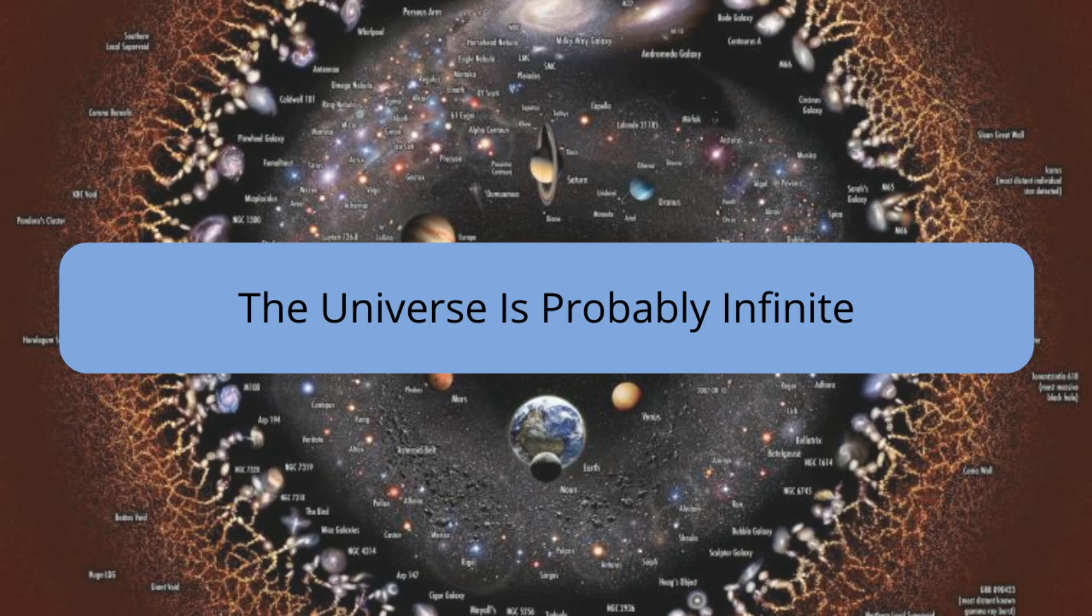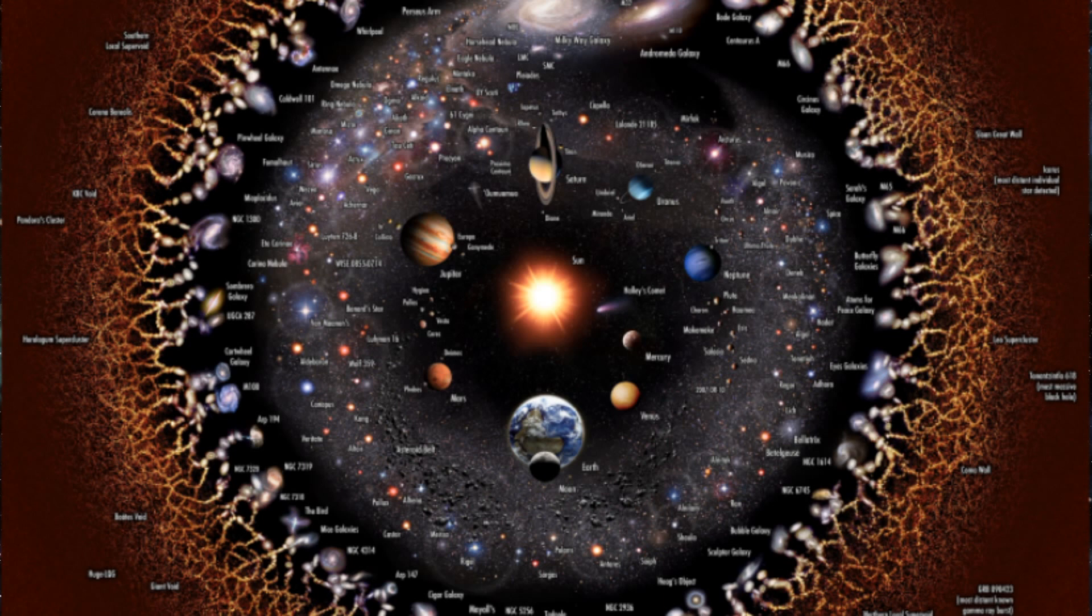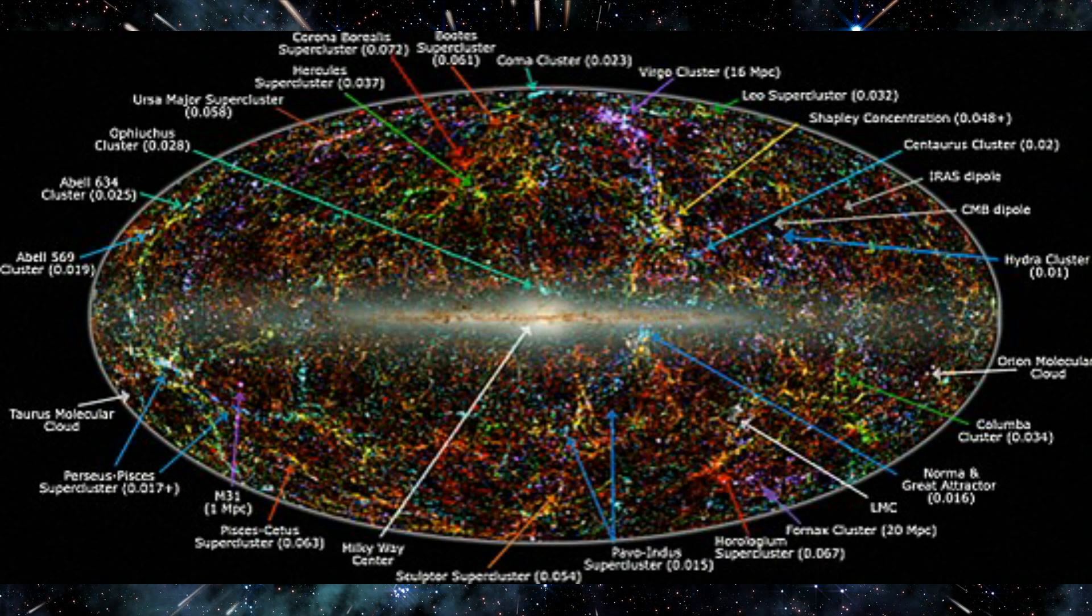The universe is probably infinite. This is one of the most mind-boggling questions humanity has ever pondered. The vastness of space stretches our comprehension, and the idea of an infinite universe is both thrilling and challenging to grasp. Here's a dive into what we know and what we don't about the universe's potential infinity. When we talk about the universe, it's important to distinguish between the observable universe and the entire universe. The observable universe is the portion of the universe that we can potentially see or detect, limited by the speed of light and the age of the universe. It's a vast bubble, roughly 93 billion light years in diameter, but that's just a tiny fraction of what might exist beyond.